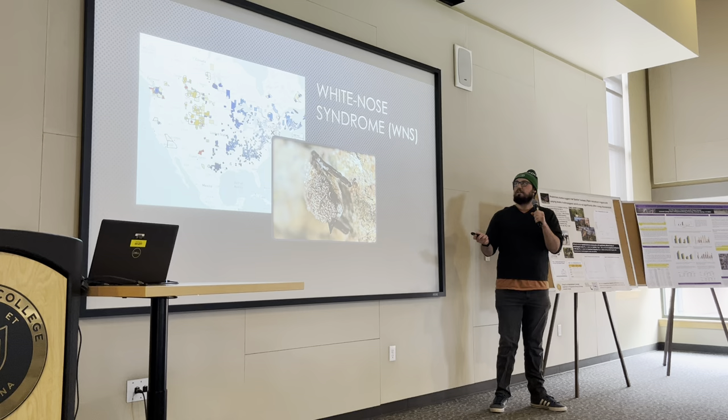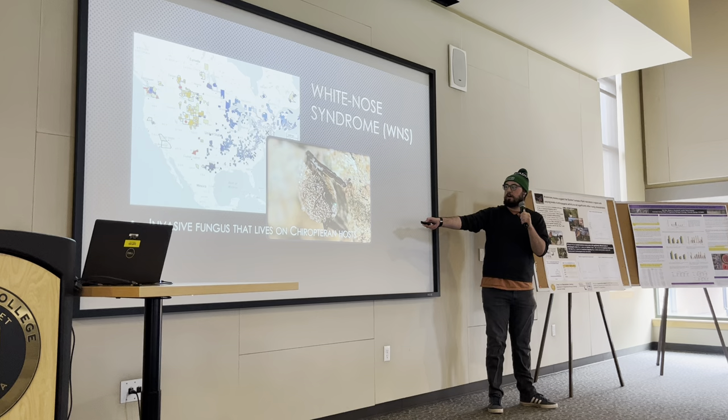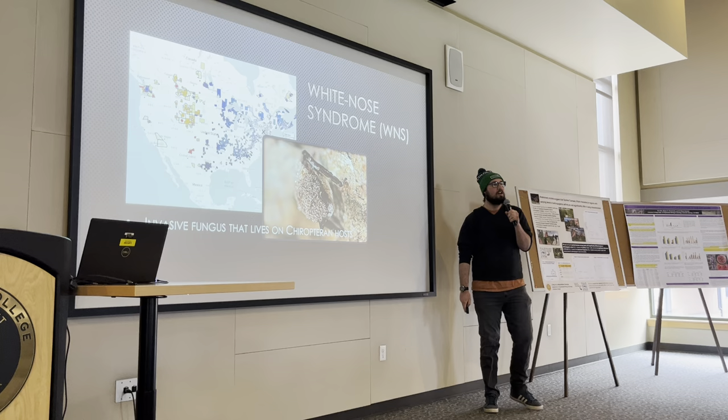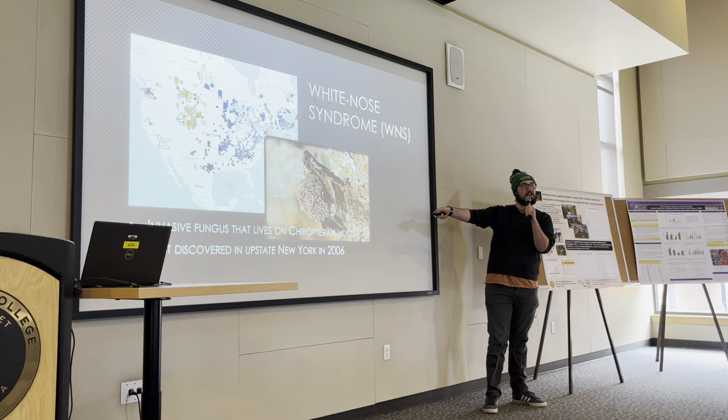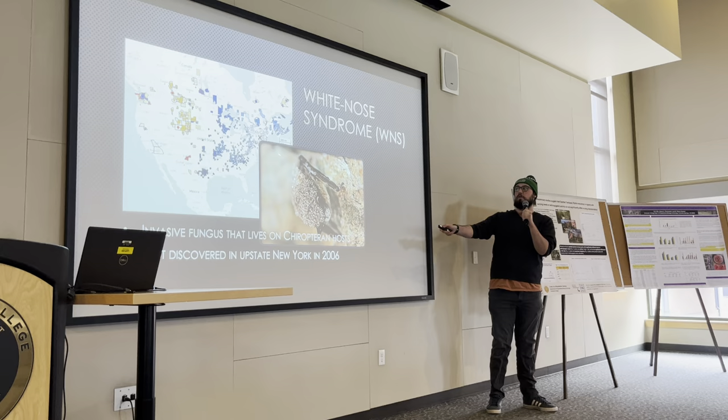So what happens when one of those invasive species is a fungus? Looking at White Nose Syndrome — this is a fungus that lives exclusively on Chiropterans, or bats. You can see evidence of it right here on the nose of this little brown bat from the East Coast, where it was first discovered in 2006 in North America. This X mark in upstate New York represents the first occurrence in North America, and this gradient from light to dark blue shows the continual spread through different years, with the most recent three years represented in yellow, orange, and red.